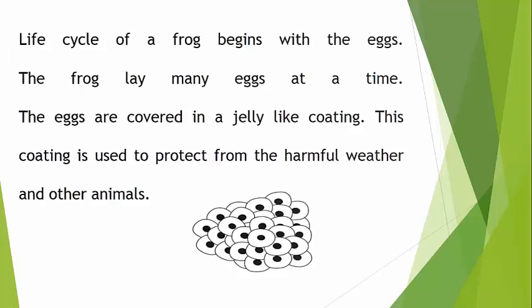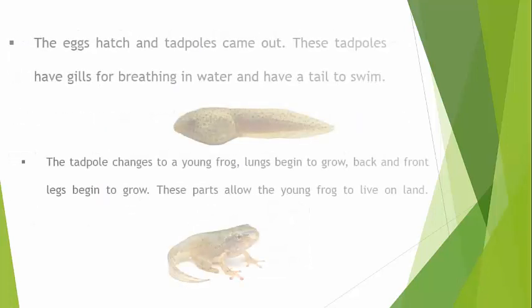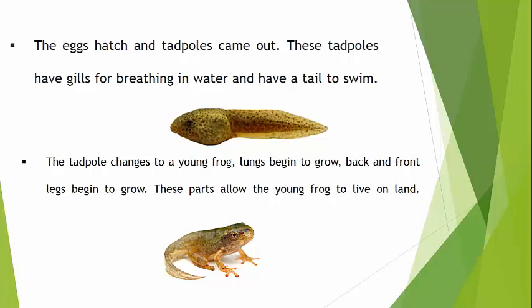Then it comes to the next stage: the eggs hatch and tadpoles come out. After a time period, when the eggs hatch, tadpoles come out. These tadpoles have gills for breathing in water. Because they are like little children of the frog, they have gills that work in water, and they have a tail to swim with.